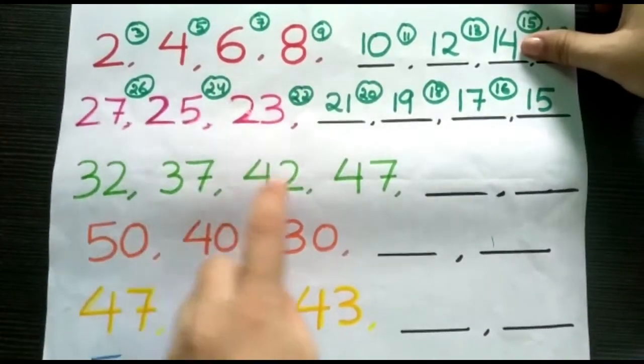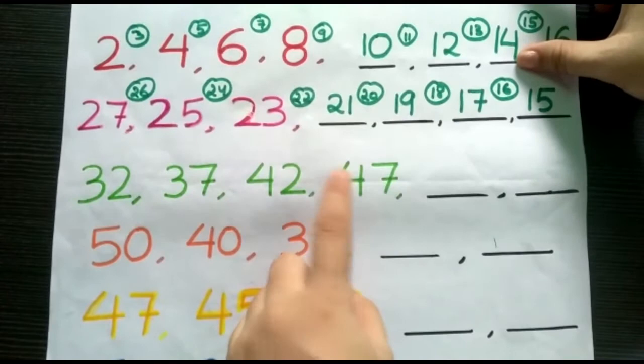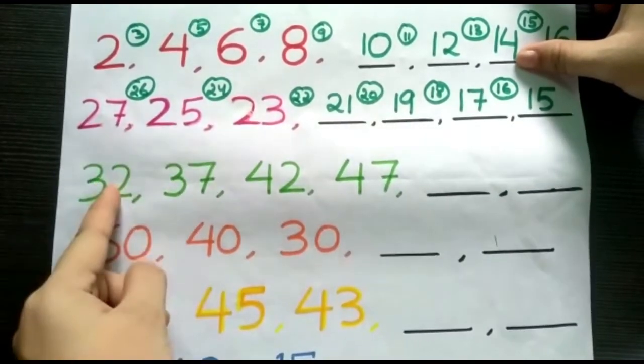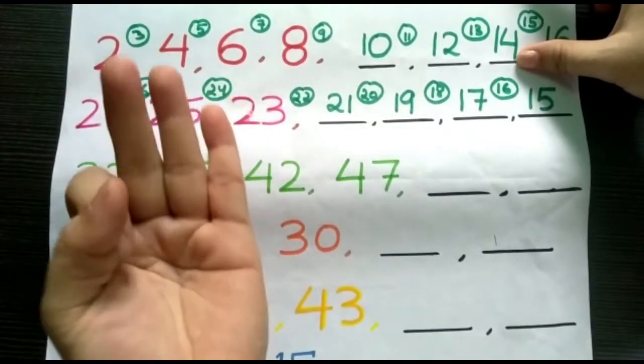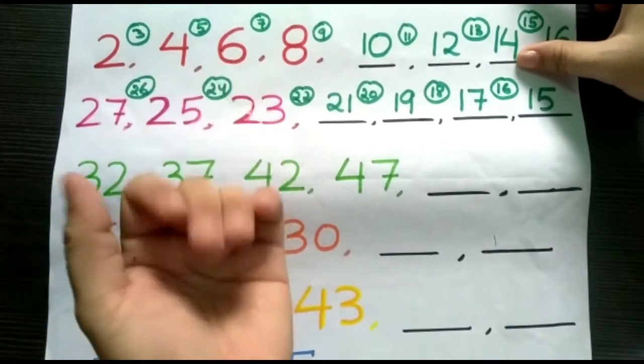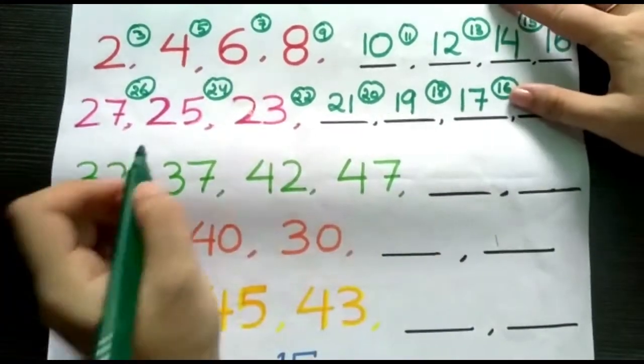In this example, we have 32, 37, 42, 47. Here, we have 32, 37, 32, 33, 34, 35, 36, 37, which means it is increasing by 5 numbers.